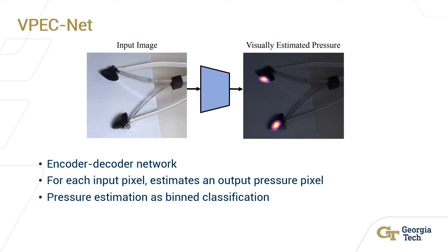Next, we train VPACnet to estimate pressure based on a single RGB input frame. VPACnet is an encoder-decoder network, and for each input pixel, one output pressure pixel is estimated. We treat pressure estimation as a classification problem where the pressure values are divided into nine bins.